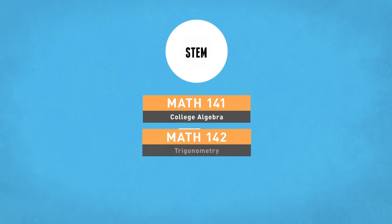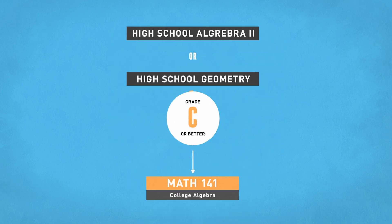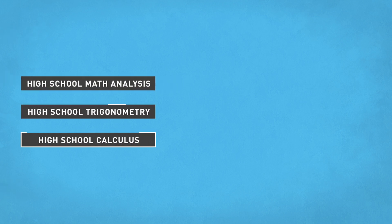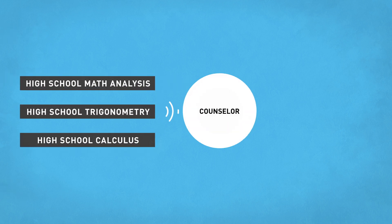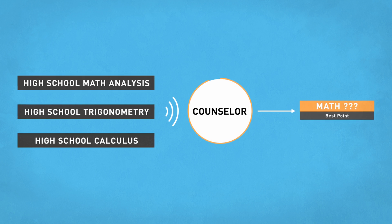STEM majors generally require more math preparation. Students with Algebra 2 and Geometry in high school with C grades or better could start the sequence with Math 141. Students who have completed Math Analysis, Trigonometry, or Calculus in high school should speak to a counselor to determine the best starting point, as higher levels of math require counselor clearance.